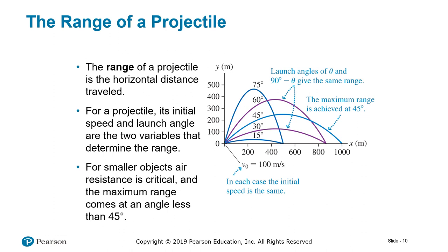The range of a projectile is the horizontal distance traveled. For a projectile, its initial speed and launch angle are the two variables that determine the range. For smaller objects, air resistance is critical. The maximum range comes at an angle less than 45 degrees. So 45 degrees will actually give you the maximum range.